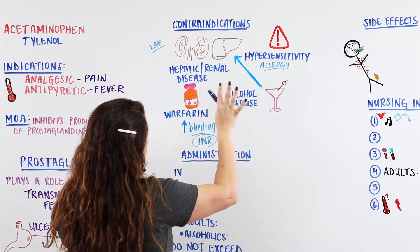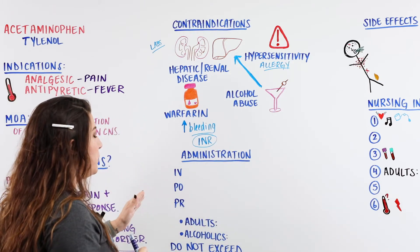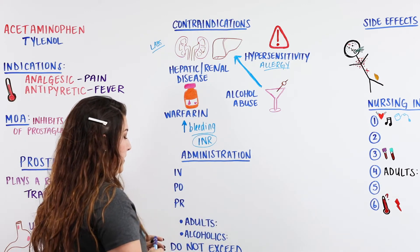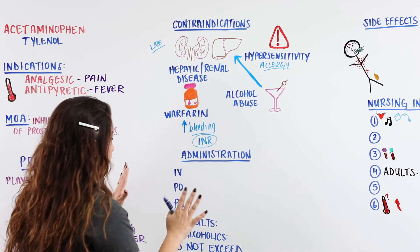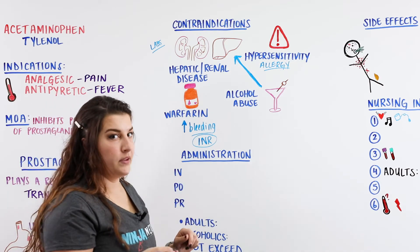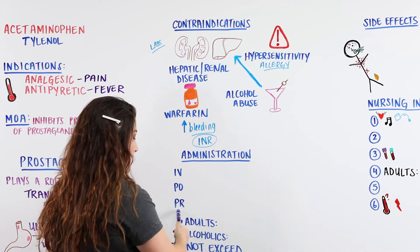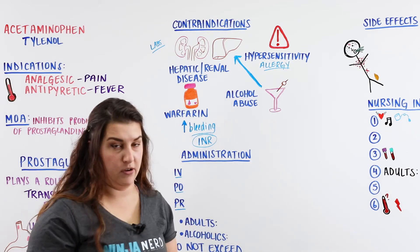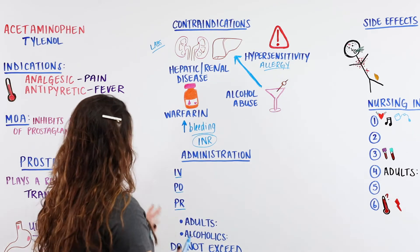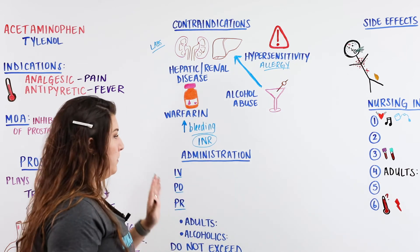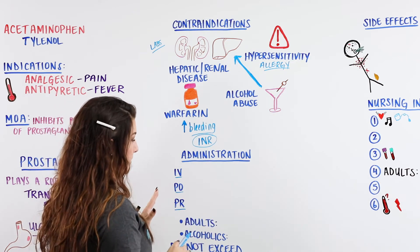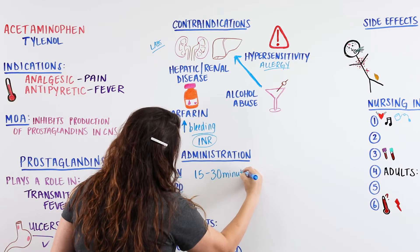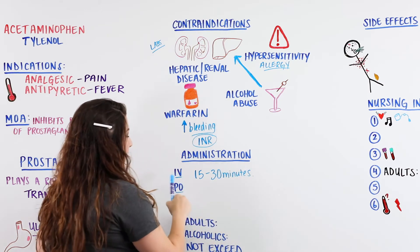When we administer this medication, there are different routes and different onset times to consider. We have IV (intravenous), PO (oral), and PR (rectal). For IV administration, the onset is 15 to 30 minutes. Someone having a fever or pain is not going to get relief until at least the 15- to 30-minute mark.